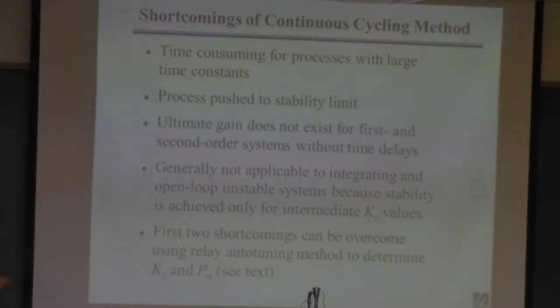Here's what I said. You can overcome most of these problems by using this method described in the book. It's called relay auto-tuning. It's very commonly used in process control. It's automated so you can take a controller and do relay feedback and get the parameters pretty quickly. And if you're interested in that, you can see the text.